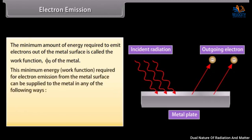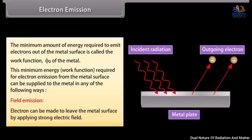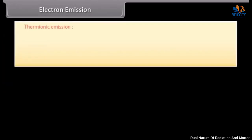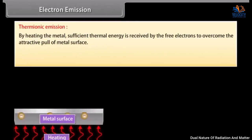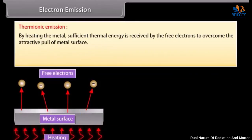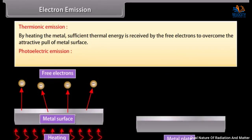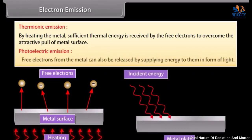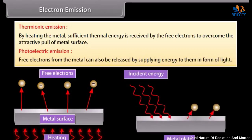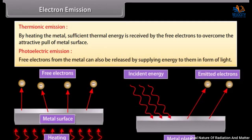This minimum energy — the work function — required for electron emission from the metal surface can be supplied in any of the following ways. Field emission: electrons can be made to leave the metal surface by applying a strong electric field. Thermionic emission: by heating the metal, sufficient thermal energy is received by the free electrons to overcome the attractive pull of the metal surface. Photoelectric emission: free electrons from the metal can also be released by supplying energy to them in the form of light.